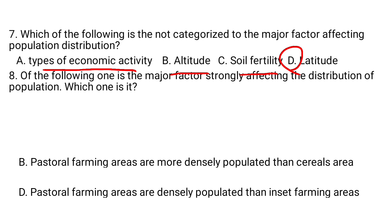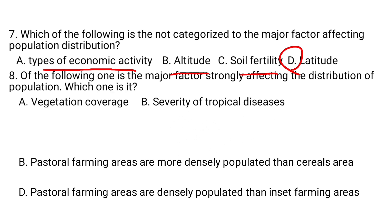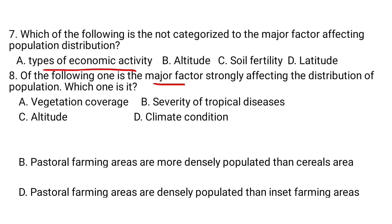But latitude is not, so the answer is D. Question number 8. Of the following, which one is not a major factor affecting the distribution of population? A. Vegetation coverage, B. Severity of tropical diseases, C. Altitude, D. Climate conditions. Vegetation coverage, altitude, and climate conditions are major factors. However, the most strongly influential major factor is altitude.